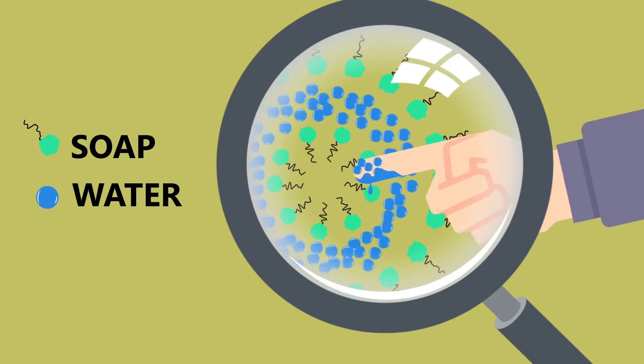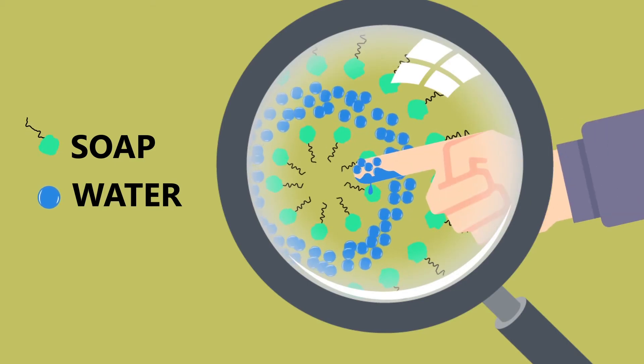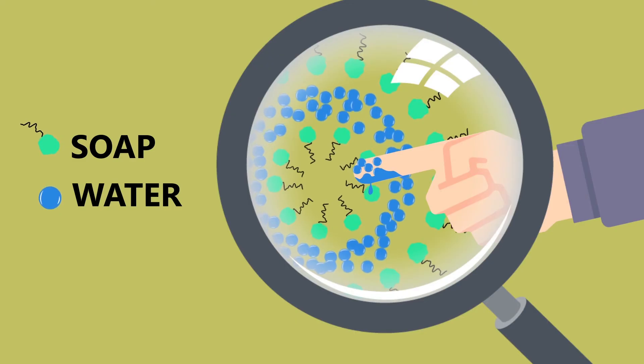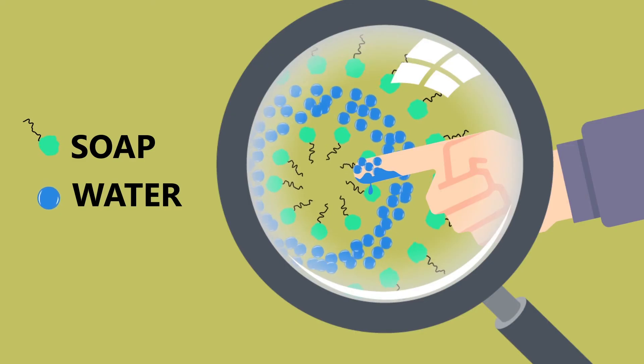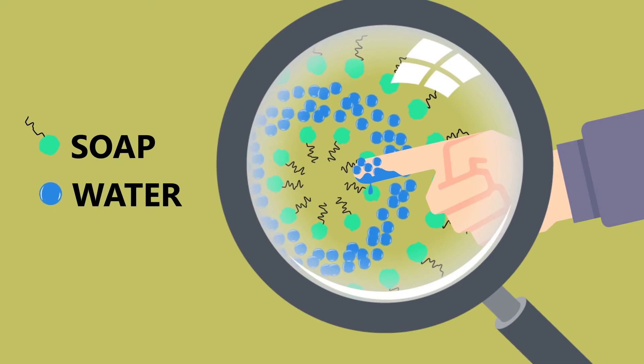But when you put your wet finger inside the bubble, none of the water is attracted to the finger. Because it is already wet and water can keep its surface tension.